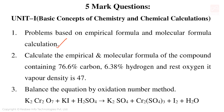A book-based problem: calculate the empirical and molecular formula of a compound containing 76.6% carbon, 6.38% hydrogen, and the rest oxygen, given that its vapor density is 47. This is a very important 5 mark question.